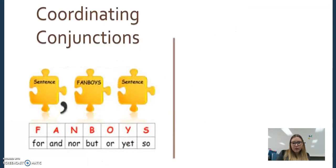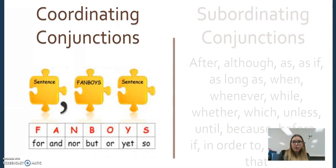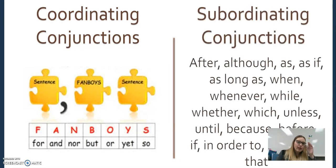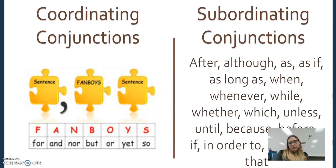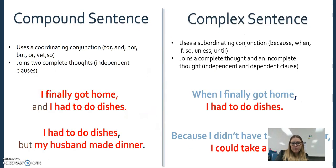The last thing we'll talk about here are coordinating conjunctions and subordinating conjunctions. Coordinating conjunctions are our FANBOYS that English teachers like to use: for, and, nor, but, or, yet, so. Subordinating conjunctions are things like 'after,' 'although,' 'as,' 'if' — they create a subordinate clause, which is dependent on another clause in the sentence. We'll look at some examples of compound sentences joined by coordinating conjunctions.